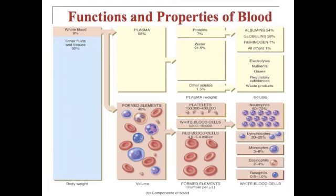Looking at the formed elements, which make up about 45% of the blood by volume: according to Figure 19.1, there are between 150,000 to 400,000 platelets per microliter of blood. In the same volume, there are about 5,000 to 10,000 white blood cells, and 4.8 to 5.4 million red blood cells.